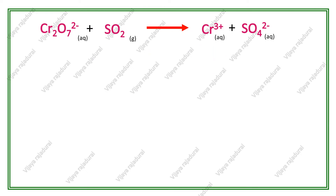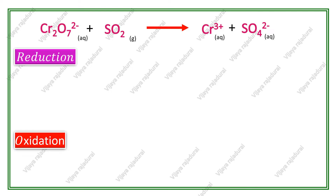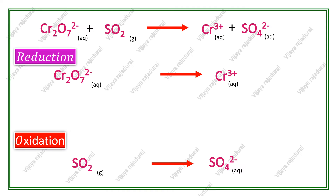In the half reaction method, the first step is splitting of the given redox reaction into reduction and oxidation reactions. In dichromate, the oxidation state of chromium is plus 6, and it is reduced to chromium 3 plus. So dichromate to chromium 3 plus is the reduction reaction. Sulfur dioxide to sulfate ion is the oxidation reaction.